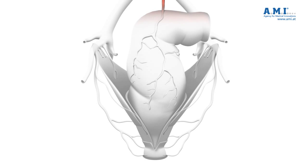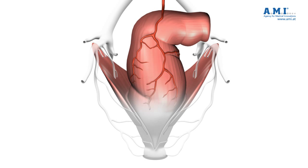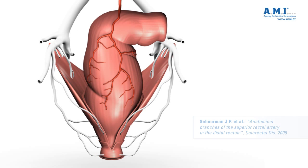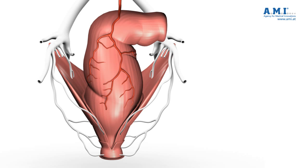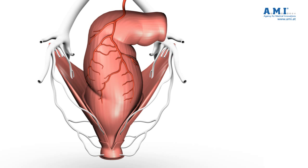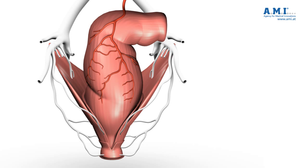During the last few years, the rectal arteries have been the subject of considerable scientific attention. A study published in 2008 showed that the superior rectal artery is in fact the only artery of any significance supplying the hemorrhoidal cushions. It can also be seen that the number of smaller arterial branches in the corpus cavernosum recti differ greatly from patient to patient, as does the position of the rectal arteries in the hemorrhoidal cushions. In summary, neither the number nor the position of the rectal arteries is predictable. This fact plays an important role in explaining the success of the HAL method.